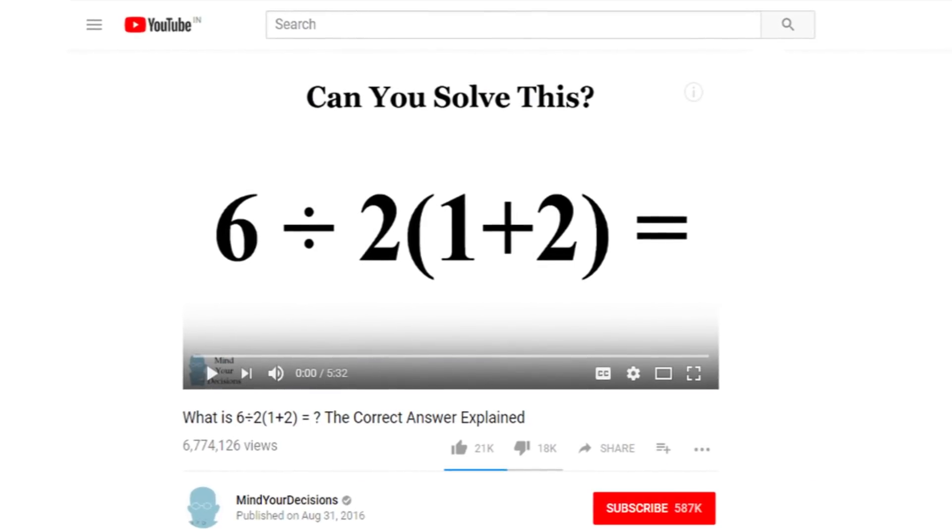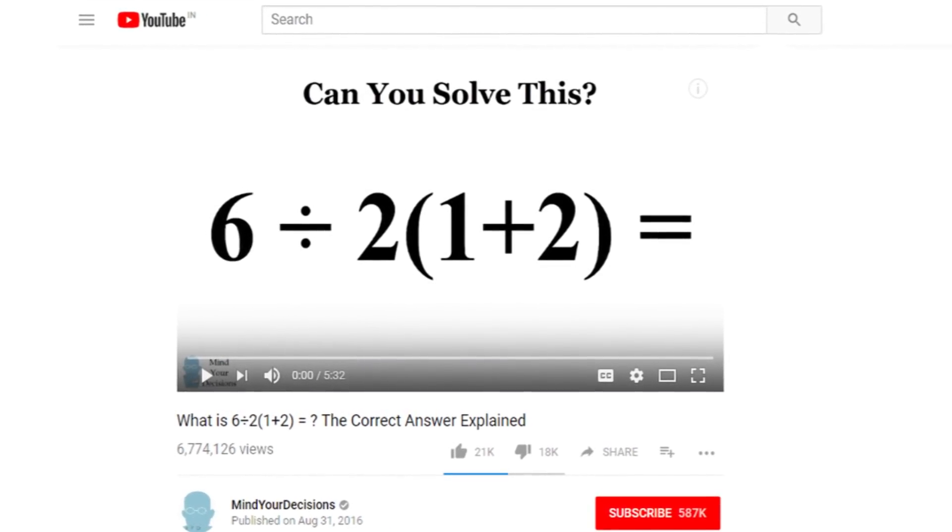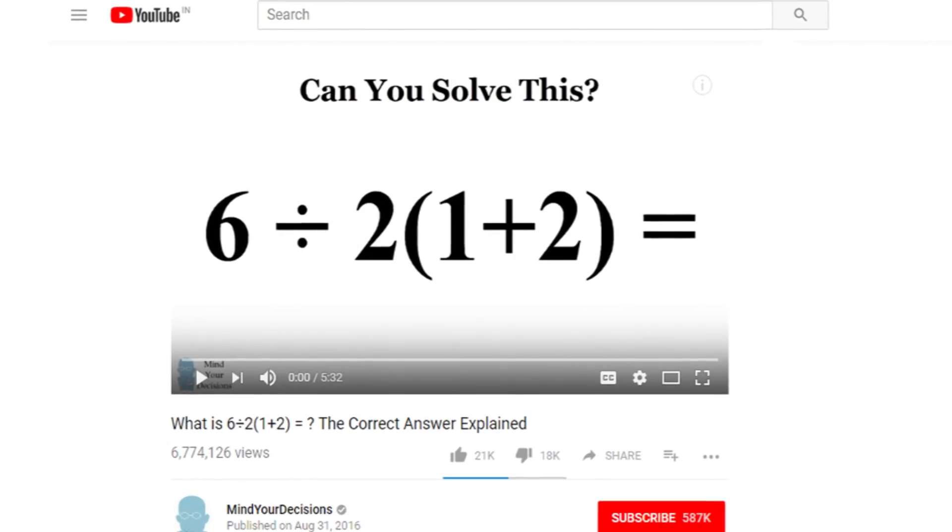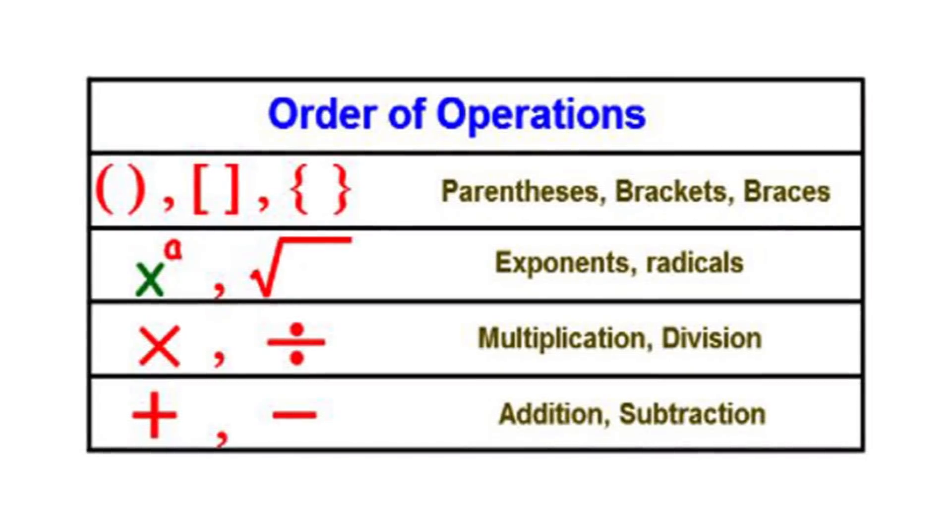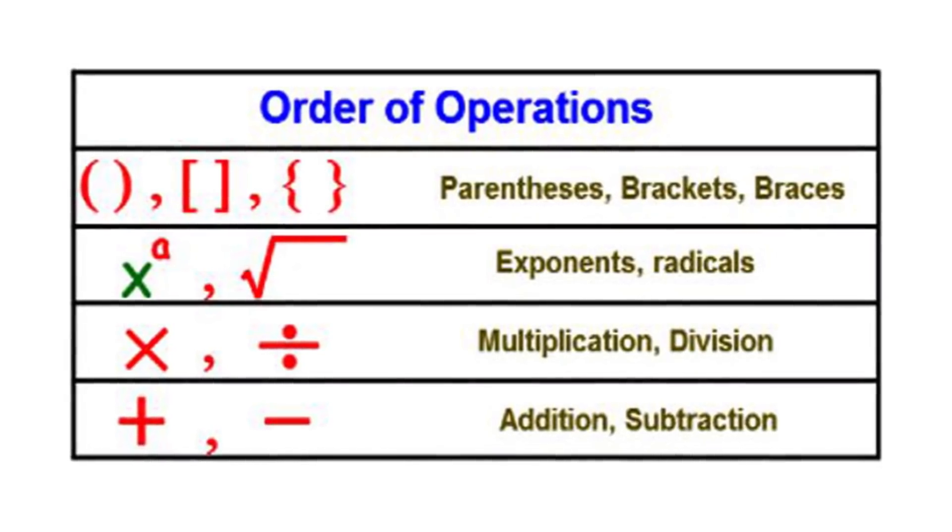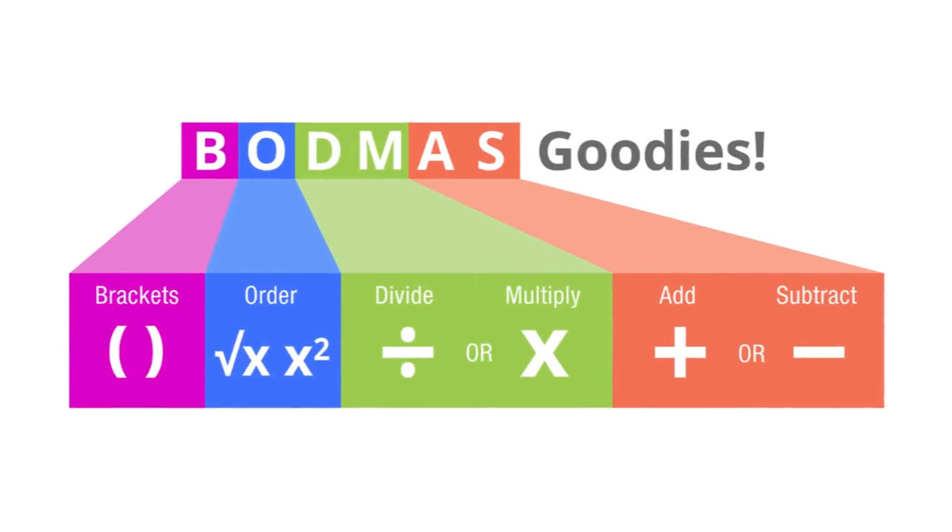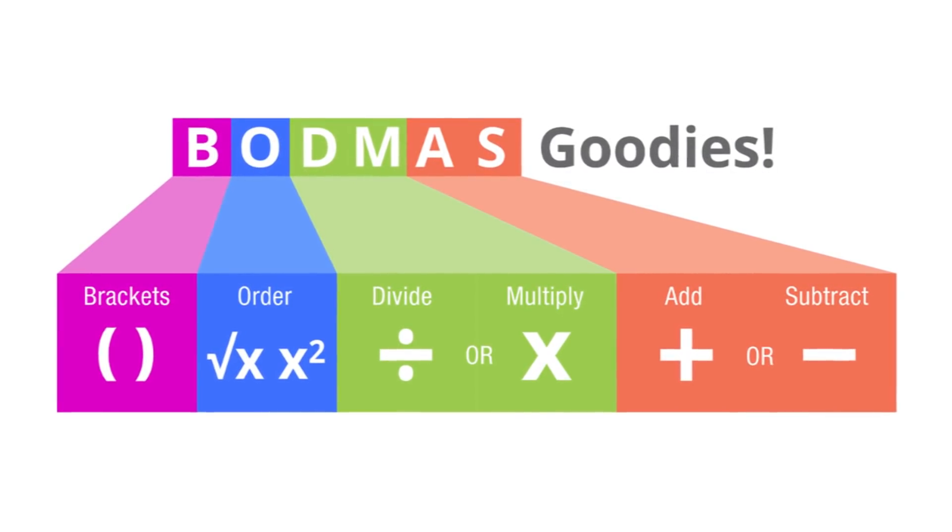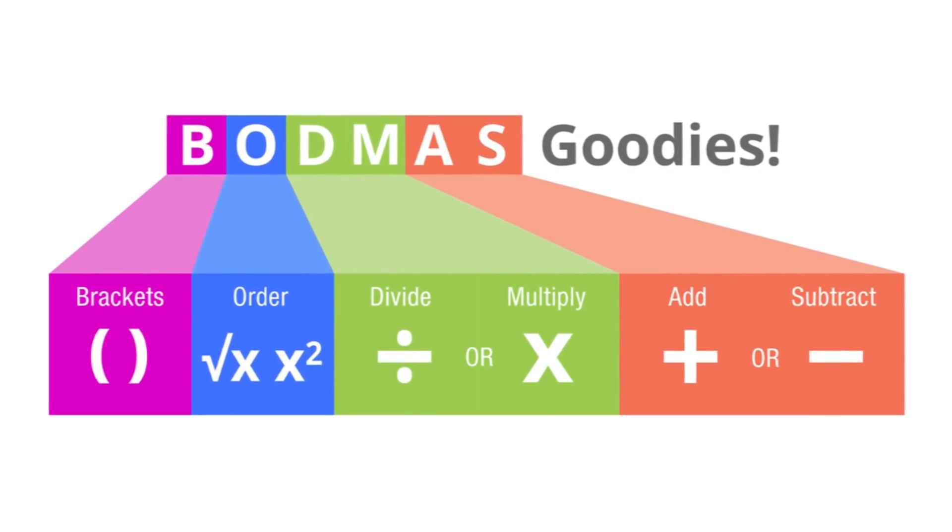To help get to the bottom of all of this confusion, Talwalkar posted a video to show that there is only one correct way to solve the problem. The way that this equation should be figured out is to use the order of operations.